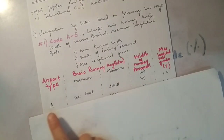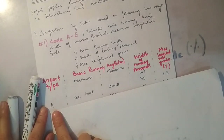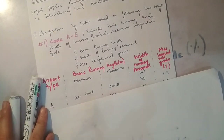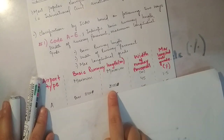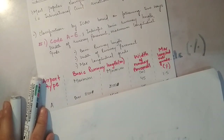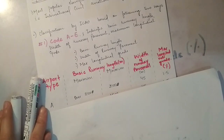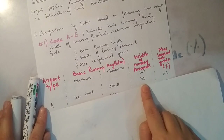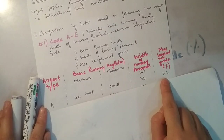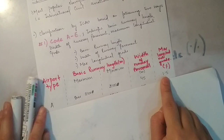जब हम Type A airport की बात करते हैं, हमारी runway की length 2100 meters to greater than 2100 meters होनी चाहिए। जब भी आपकी runway length 2100 meters या greater than 2100 meters आएगी, आप आँखें बंद करके बोल देना कि this is a Type A airport. Width of runway pavement उस time 45 meters होनी चाहिए, और maximum longitudinal grade 1.5% होना चाहिए।